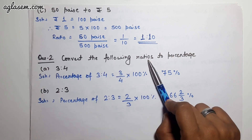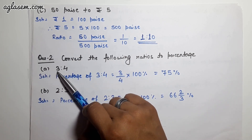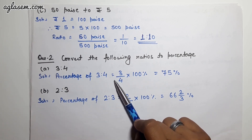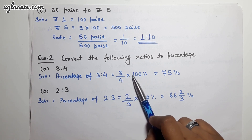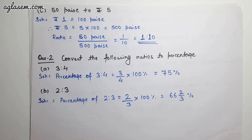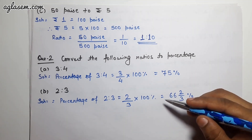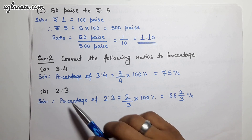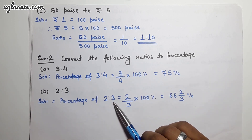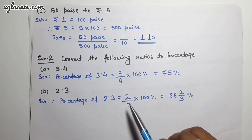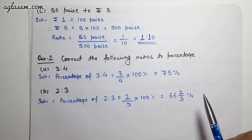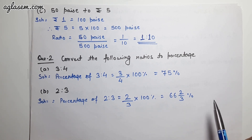Question 2 says: convert the following ratios to percentages. Part A: 3:4 — percentage = (3/4) × 100 = 75%. Part B: 2:3 — percentage = (2/3) × 100 = 66⅔%.